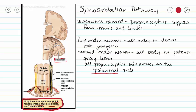Most of our information, if it originates on the right-hand side, decussates to the left-hand side. But our second order neuron here either does not decussate or decussates twice, so it is always going to arrive in the cerebellum on the same side that the information originated.